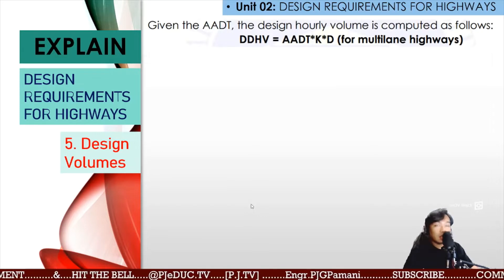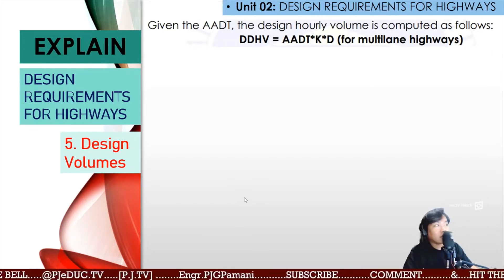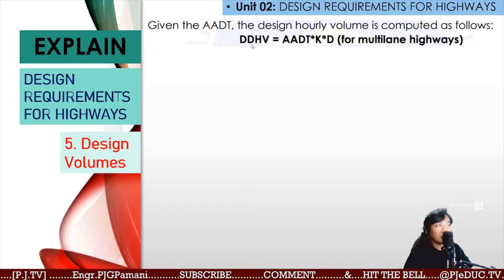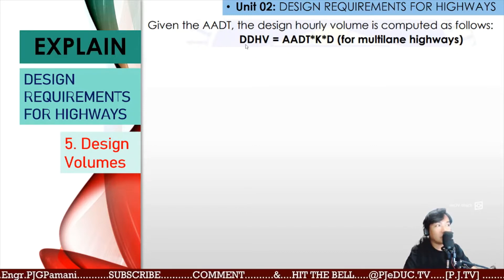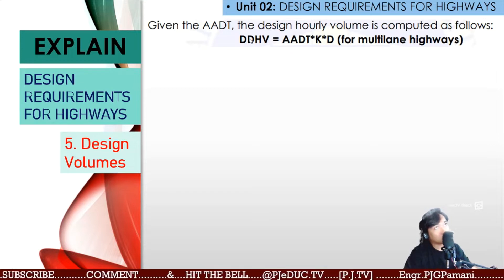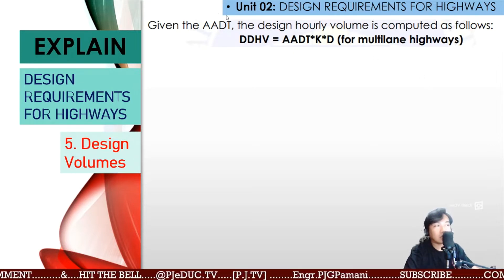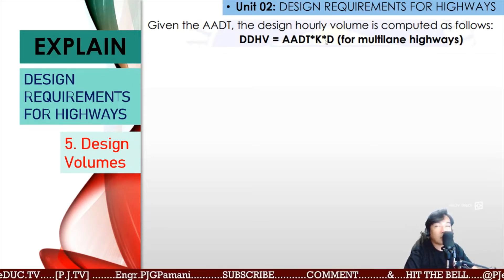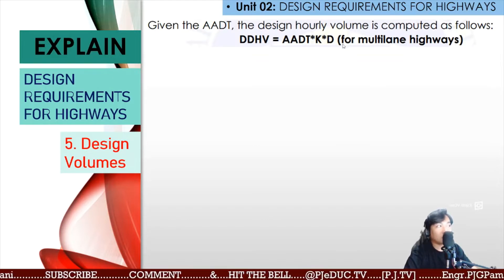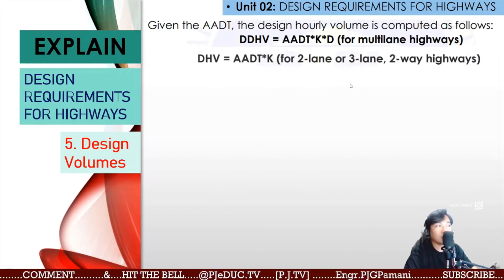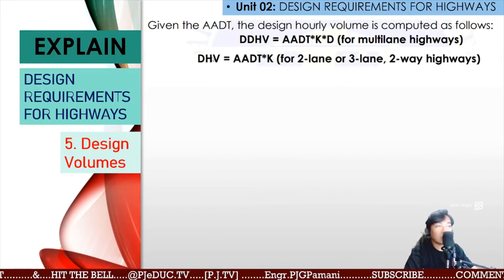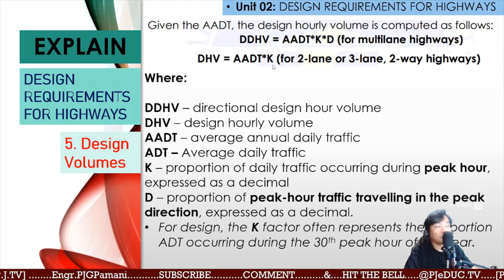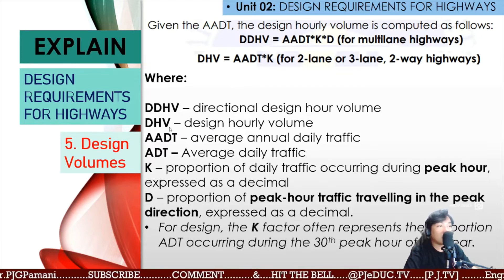Given AADT or your Annual Average Daily Traffic, the design hourly volume is computed as follows. Your DDHV — Directional Design Hour Volume — is basically your AADP (either present or future) times the peak hour factor K and the directional factor D. This formula is for multi-lane highways. For two-lane, three-lane, and two-way highways, the DHV is your AADP times K only.